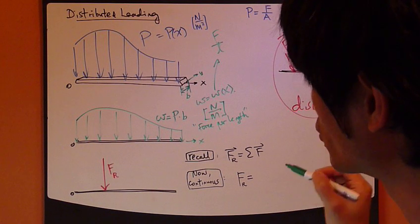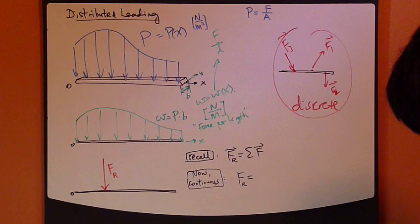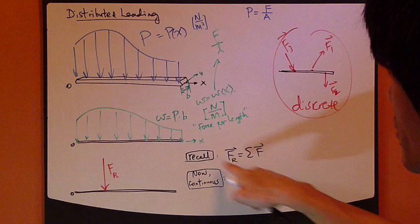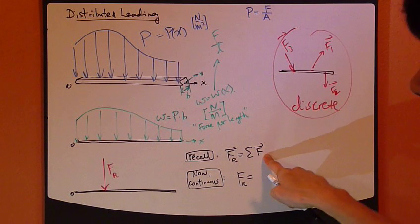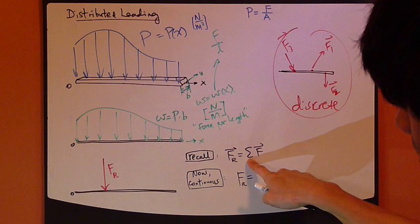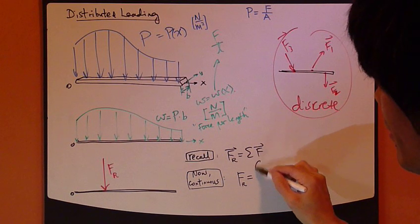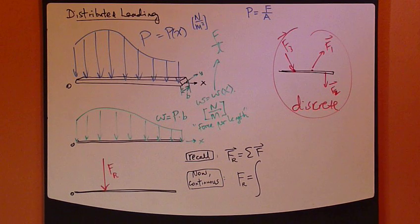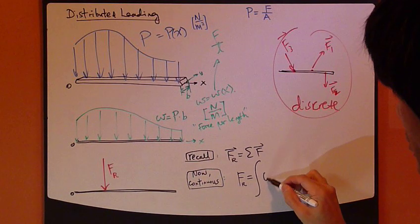So therefore, the total f, f_r, this right here, we cannot use this equation now as before. Because before, we have separate discrete forces. We can just sum them up, that's all. But now, we cannot do this summation sign. But instead, the continuous equivalent of sum in calculus is simply integration. The integral of this guy right here, w.